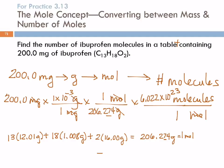So: 200.0 × 1 × 10⁻³ ÷ 206.274 × 6.022 × 10²³ equals 5.839 × 10²⁰ molecules of ibuprofen. Starting with four significant figures, this answer should have four sig figs.